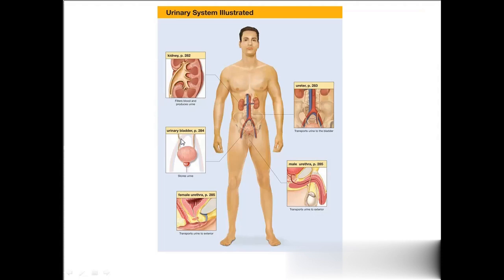The ureter connects to the urinary bladder. This is actually the male urinary system — in the male urinary system, there is a gland below the urinary bladder called the prostate gland, present only in males. In the female urinary system, the urethra is around one and a half inches long. But in the male urinary system, the urethra is around eight and a half inches long, extending into the penis.